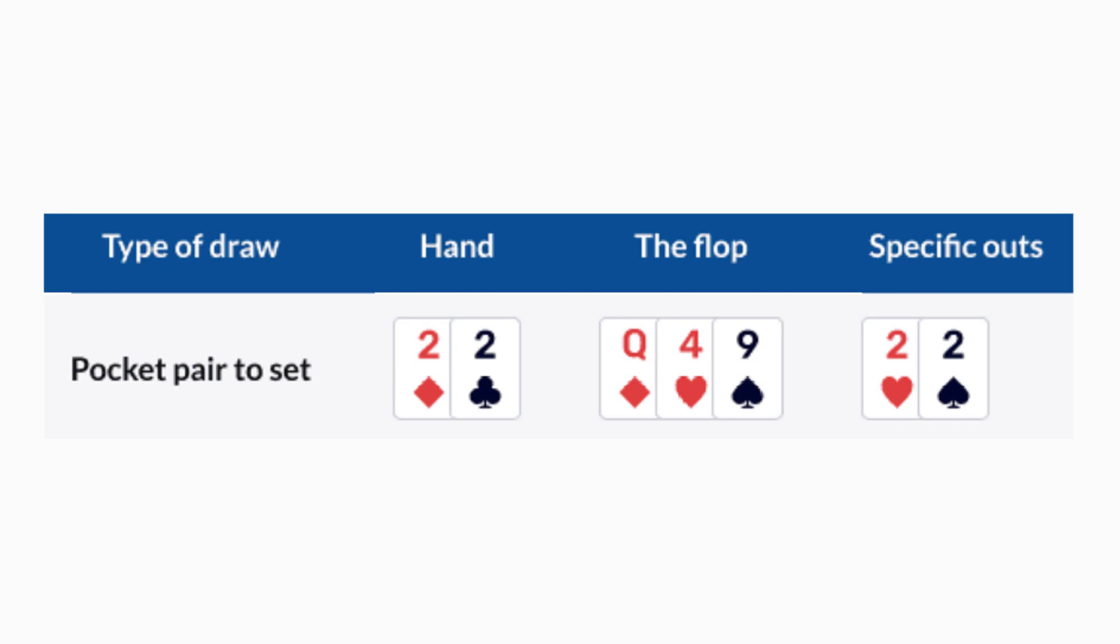Imagine you're playing Texas Hold'em Poker and you have a pocket pair of twos in your hand. The flop comes out Queen of Diamonds, Four of Hearts, Nine of Spades. The question you need to ask yourself is, how many cards will make me win here? If the other players at the table are betting like they have a Queen, a Nine, or a Four, or maybe even two pairs,